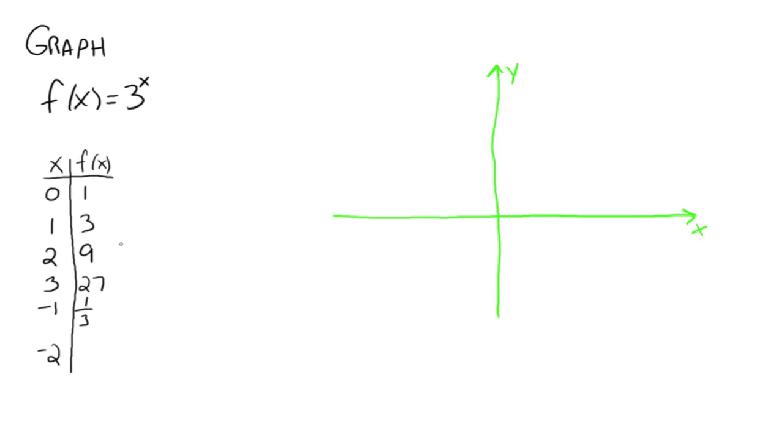Right? And when x is negative 2, you'd have 3 to the negative 2, and that would be 1 ninth. So now, as x goes out to negative infinity, goes out in the left direction here, your y values are going to get smaller and smaller. They're going to get closer and closer to 0.